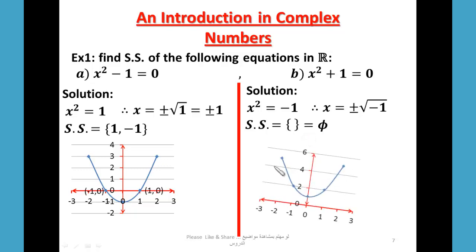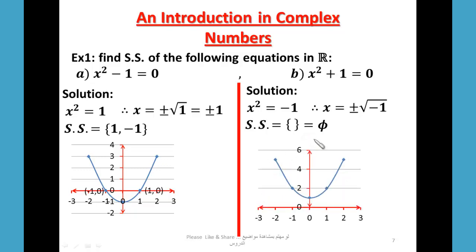When you draw a graph to represent the function f(x) = x² + 1, we get this graph, and it will not intersect the x-axis at any point. So the solution set equals φ.